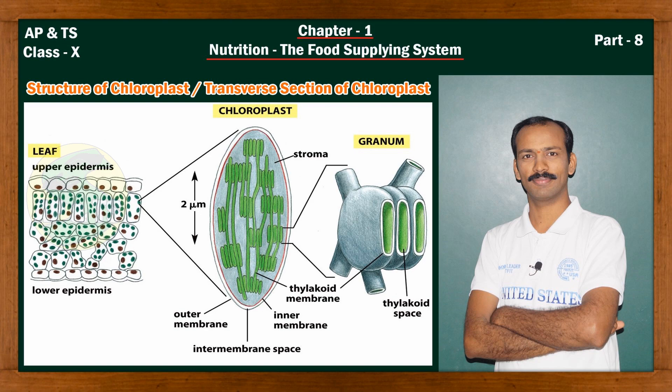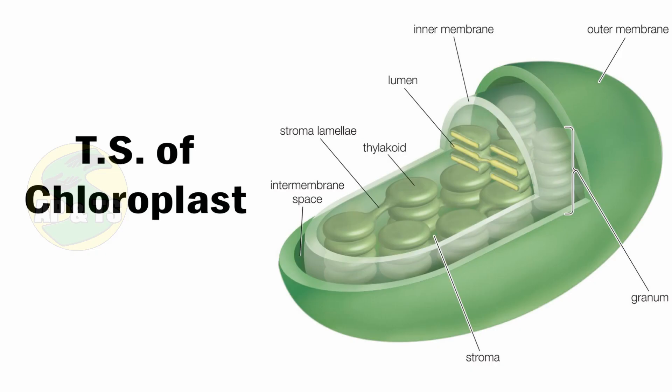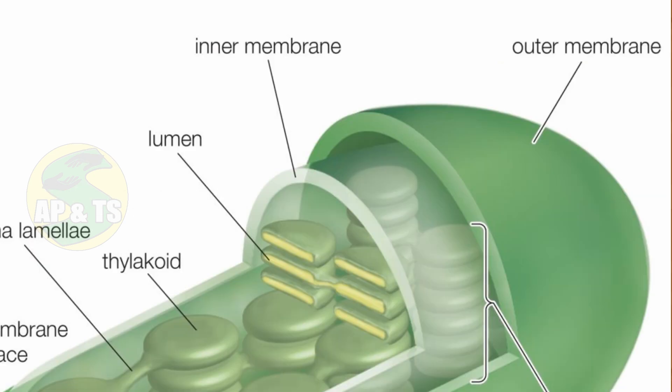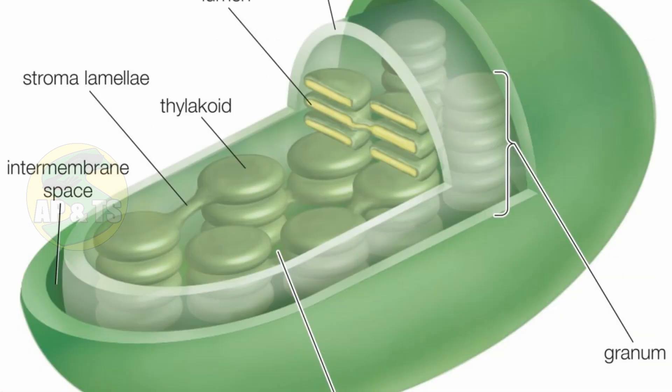Let us see the cross-section of chloroplasts with the help of a diagram. Chloroplasts are membranous structures, i.e., they are enclosed or covered by membranes. Each chloroplast consists of three membranes. The first two membranes, i.e., the outer membrane and the inner membrane, cover or envelope the chloroplast. Whereas the third membrane forms stacked sac-like structures called grana.